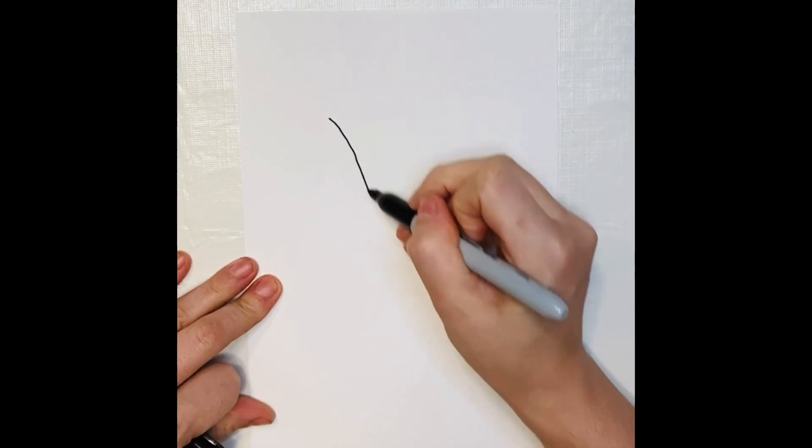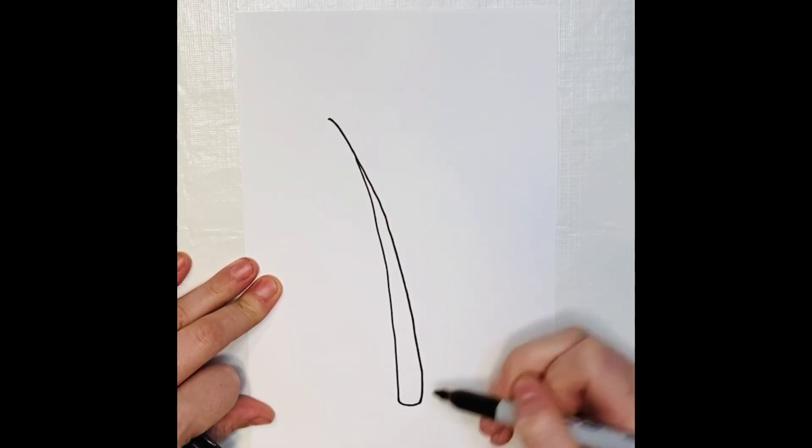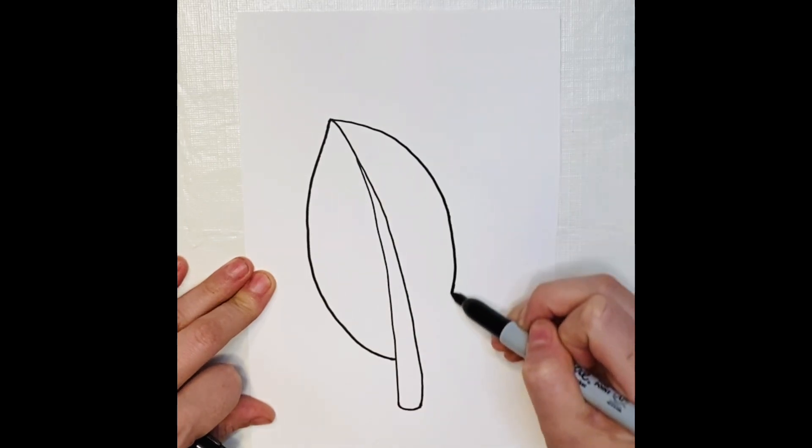Step one is to draw your leaf. I'm going to make my first leaf with a permanent sharpie marker. I just need one marker right now and my paper.